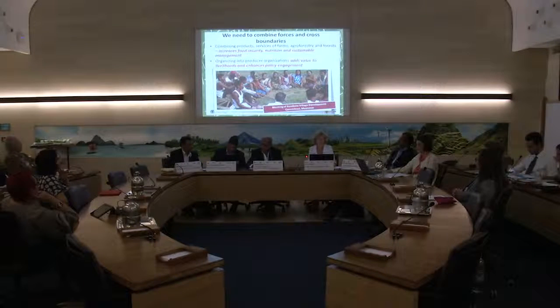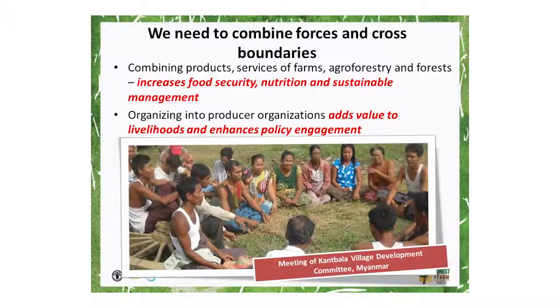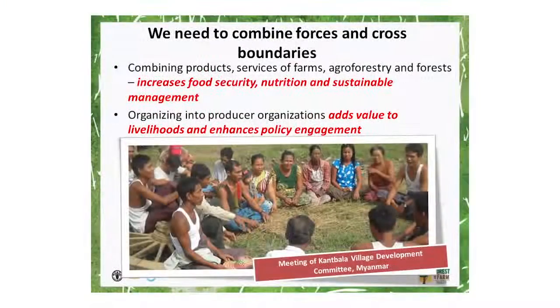We need to combine forces and cross boundaries — combining products and services of farms, agroforestry, and forests — which will increase food security, nutrition, and sustainable management. We need to help producers organize into producer organizations, which will add value to livelihoods and enhance their policy engagement. On this picture you can see a meeting of the Kanbala Village Development Committee in Myanmar, recently formed, where village members discuss planning for the marketing of their forest and farm products.